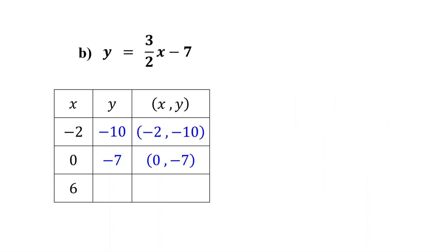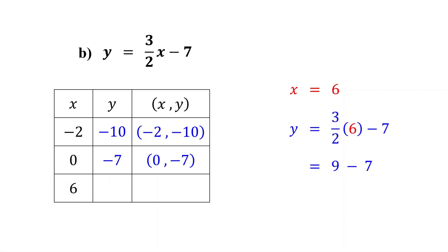Next, the value of x is given as six. Substituting six for x, you find that y equals two. So the ordered pair (6, 2) is another solution to the equation.